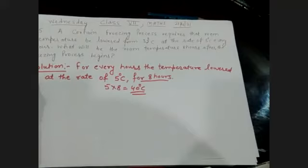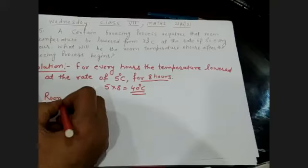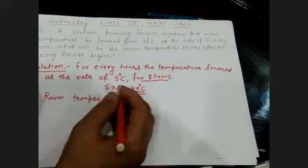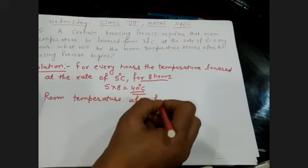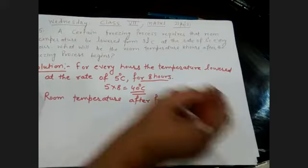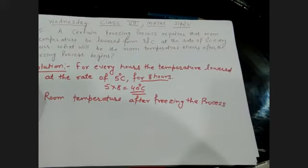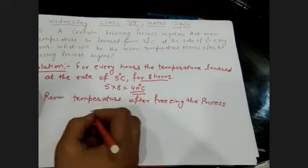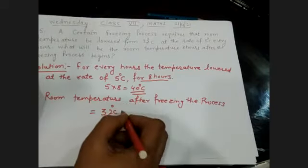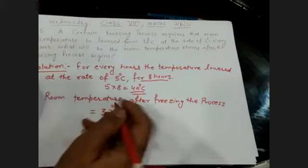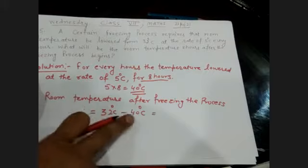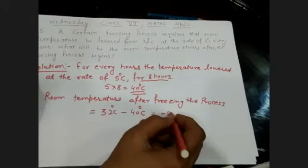So, the room temperature after the freezing process — it is lowered for 8 hours, which is 40 degrees Celsius. Since the temperature is lowered, we write minus 40 degrees Celsius. So that means: 32 plus minus 40 degrees Celsius equals minus 8 degrees Celsius.